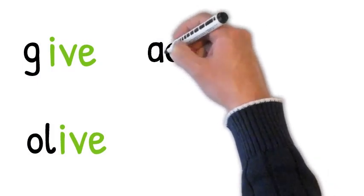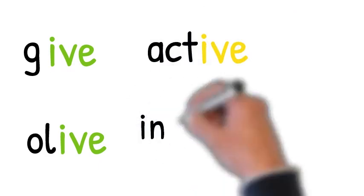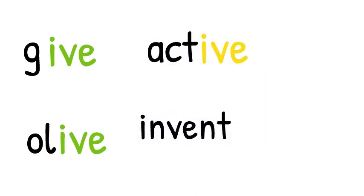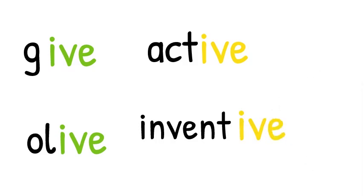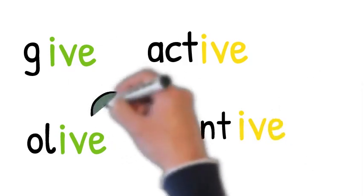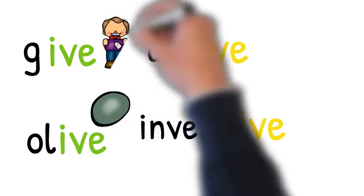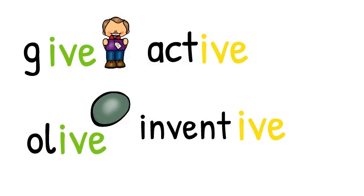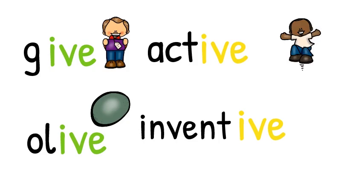Let's look at some more words where the silent E is doing its job of not letting the V be the last letter in the word. We have these words: give, olive, active, and inventive. In these words, the I-V-E is not saying I've, it's saying if. So don't get confused when you see I-V-E and be tricked into saying I've. It is if. Give, olive, active, and inventive.